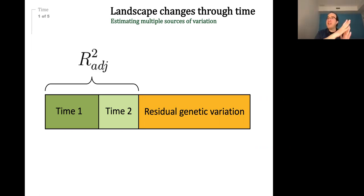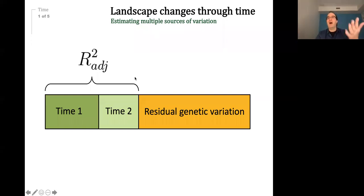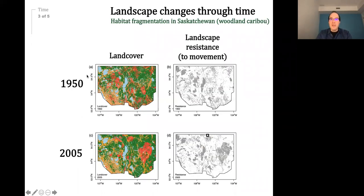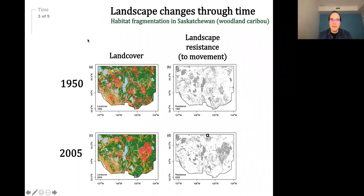We can use the spatial configuration of the past, contrasted with what the spatial configuration is today, and ask if the genomic data we have today fits better with the past or present configuration — or a mix. That allows us to provide evidence of how much the landscape change through time affected the genetic structure of that species in space. This is a landscape in Saskatchewan — specifically in the Prince Albert region — where we had land cover data from the 1950s.